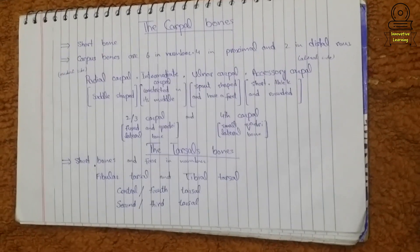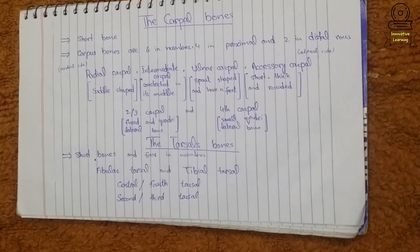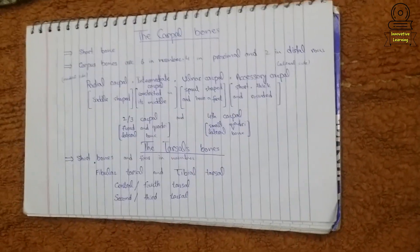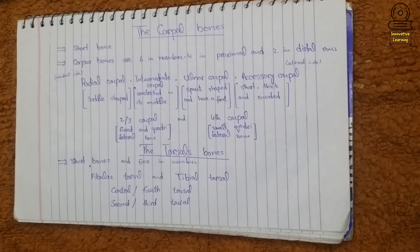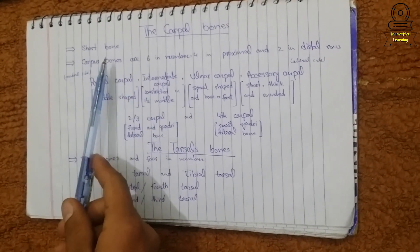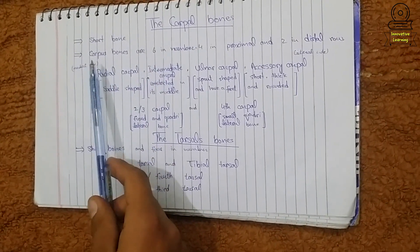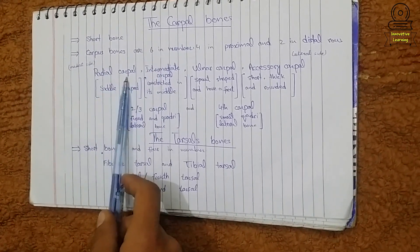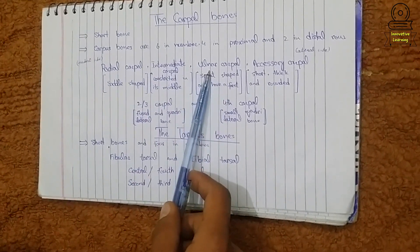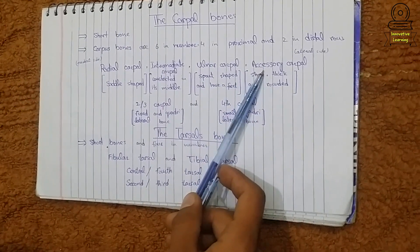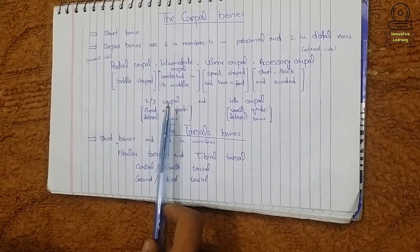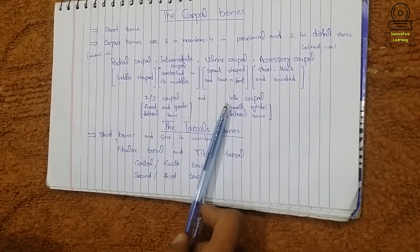Now we will discuss about the carpal bones. Carpal bones are present in the forelimb and are short bones. There are six carpal bones: first is radial carpal, second is intermediate carpal, third is ulnar carpal, fourth is accessory carpal, fifth is second and third carpal, and sixth is fourth carpal.